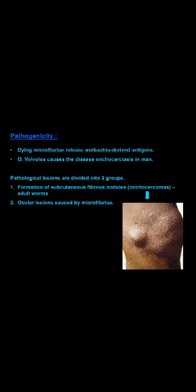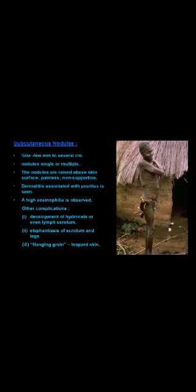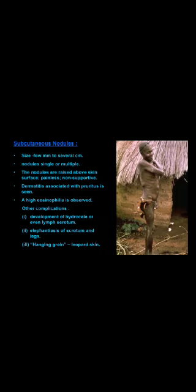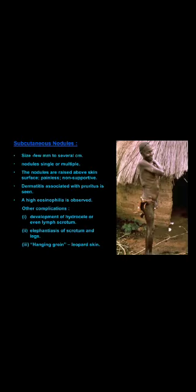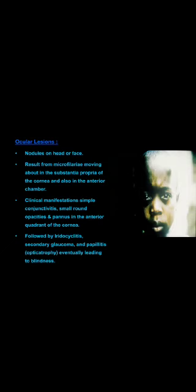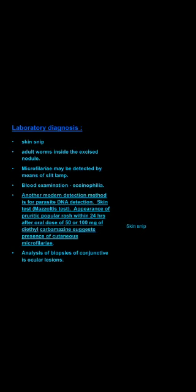Subcutaneous nodules may be seen, for example around the knee joint. In African patients, a large number of subcutaneous nodules and enlarged inguinal lymph nodes can be observed due to other filarial worms like Onchocerca. Ocular lesions may be in the form of iridocyclitis, glaucoma, and papillitis. Since microfilariae are present in the skin rather than peripheral blood, a skin snipping technique is used for lab diagnosis.